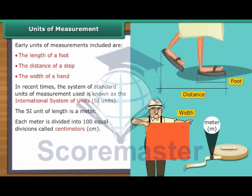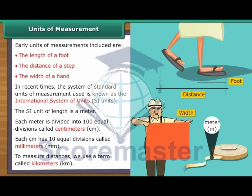Each metre is divided into 100 equal divisions. These are called centimetres or CM. Each centimetre has 10 equal divisions. These divisions are called millimetres or MM. To measure distances, we use a term called kilometres or KM.